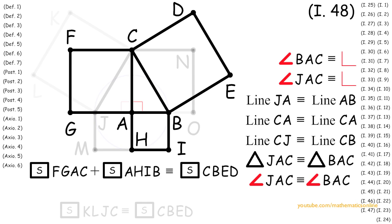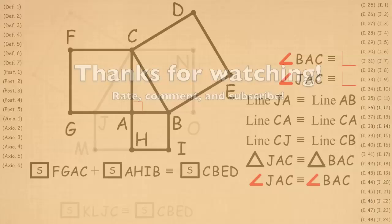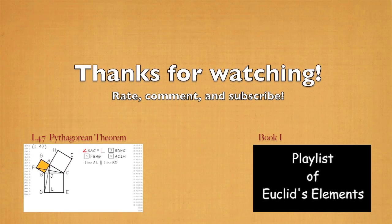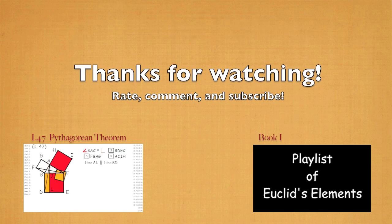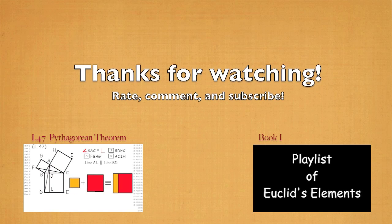So this is Euclid's proof of the Converse of the Pythagorean Theorem. For a complete look at all the propositions used in this proof, click on the right annotation for a playlist on Book 1 of Euclid's Elements. And thanks for watching.